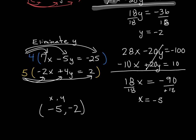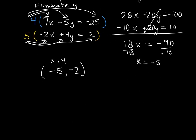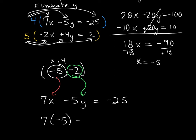The beautiful thing with these is I can check them. Let's write that equation down that I had at the very beginning one more time. It was positive 7x minus 5y equals negative 25. If I want to take that negative 5, plug it in for x, and then negative 2, and plug it in for y,